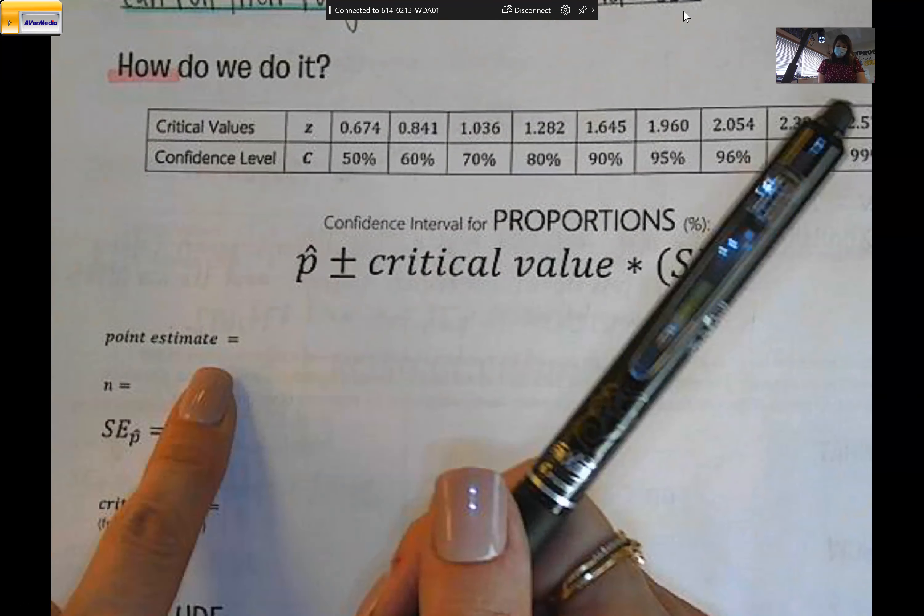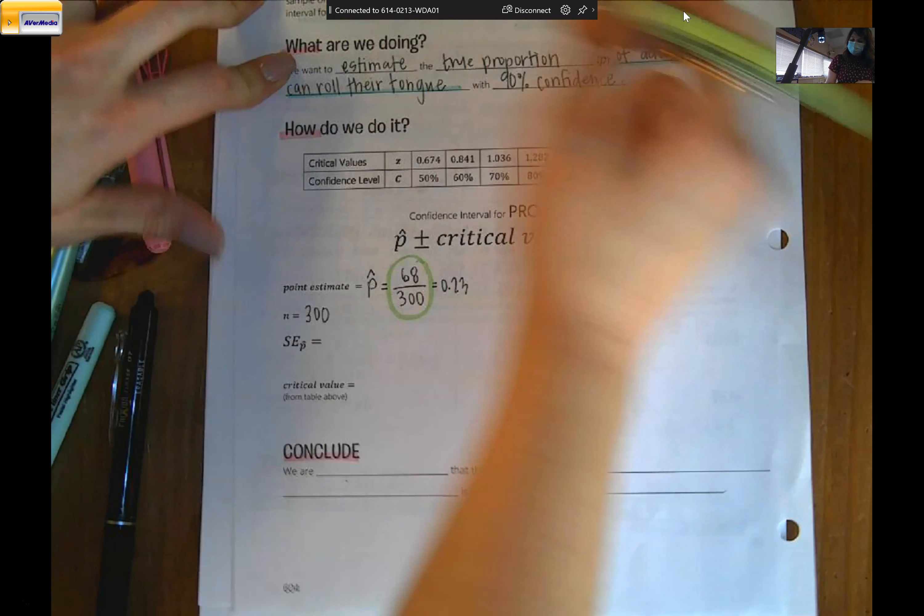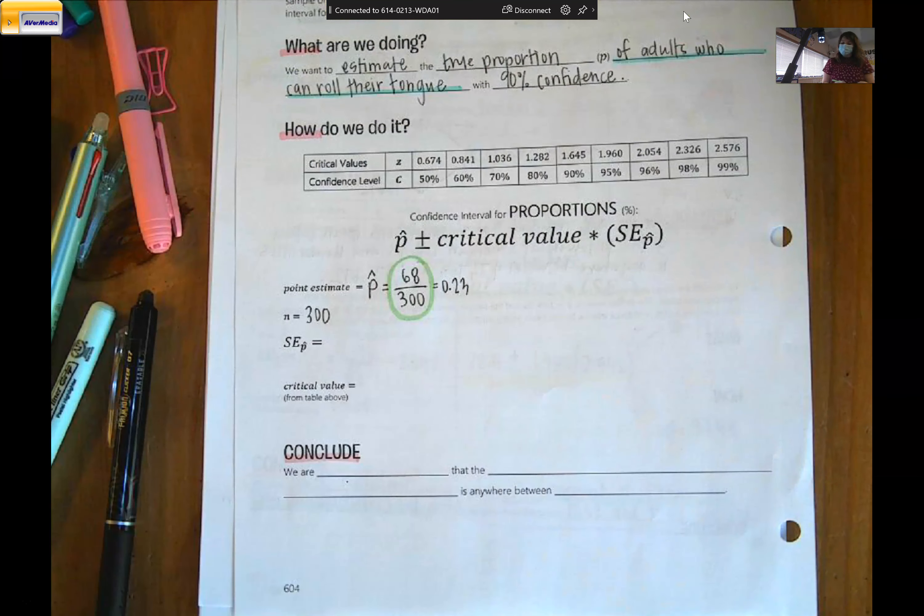And of those 300, 68 said they could roll their tongue. So if I convert that to a percent, it's 0.23. Then for you guys, I'm going to highlight in my notes where I got that just so that it's clear. So I got this fraction from this sentence in the prompt. We found 300 adults, or we sampled 300 adults and found 68 who could roll their tongue.